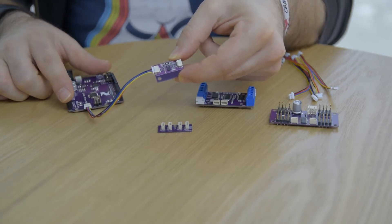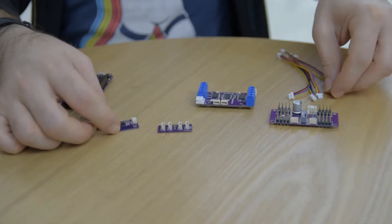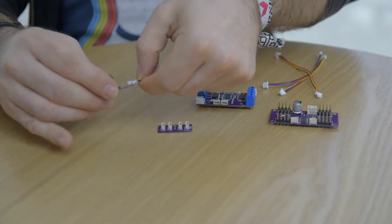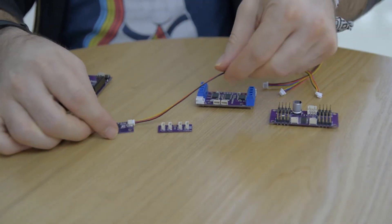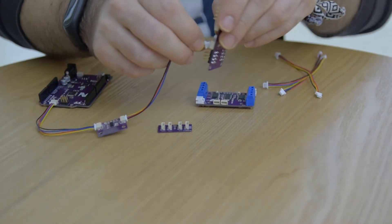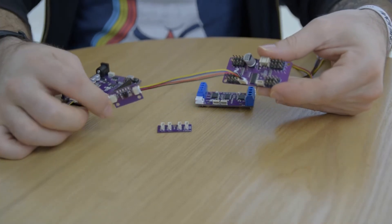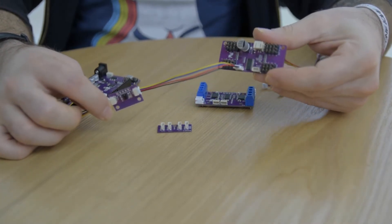And if I want to connect our servo controller, I can daisy chain them together like this because we have two connectors on each. And now the Zuino is talking to both the rangefinder and the servo controller.